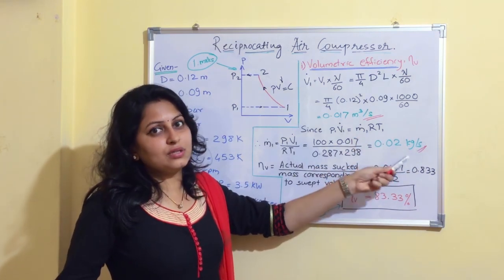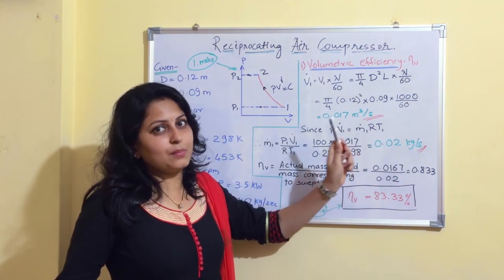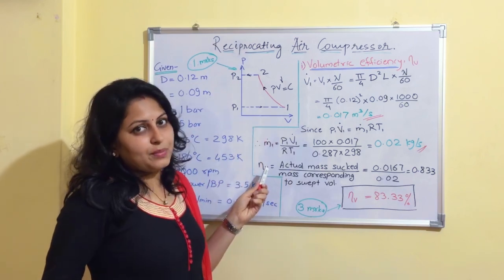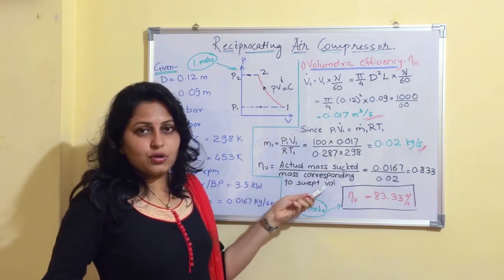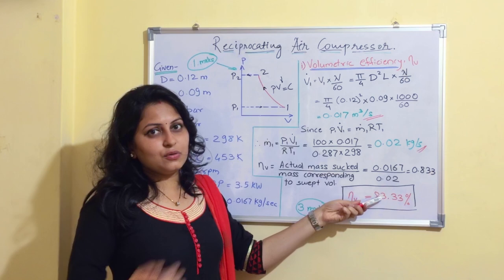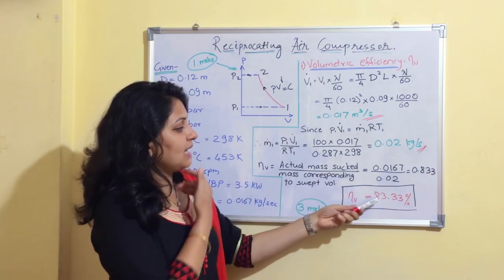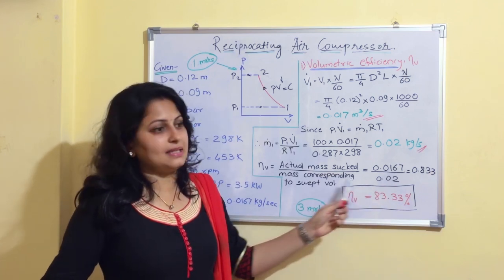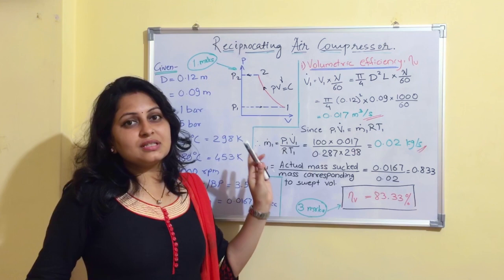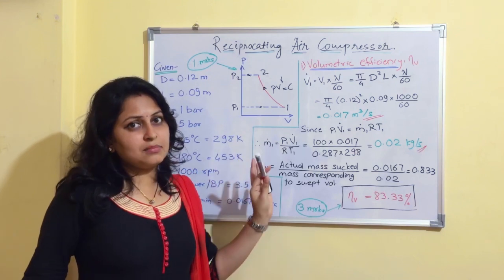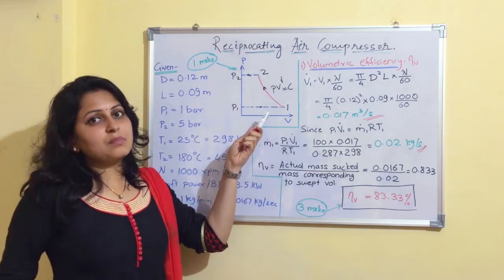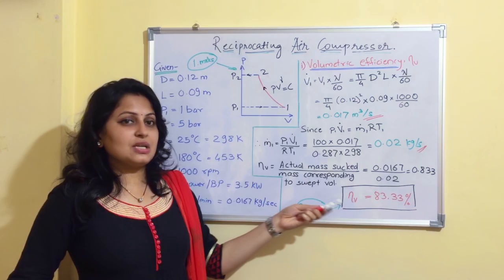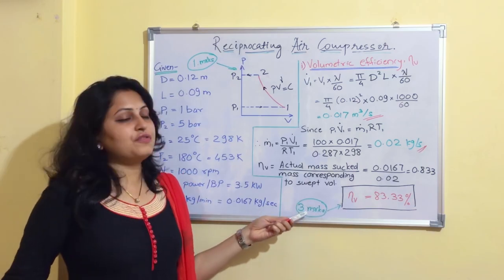Please remember all units — they are very important. Finally, substituting both values into the volumetric efficiency formula, we get 83.33%. When this question is asked for 10 marks in the university exam, the PV diagram carries 1 mark and volumetric efficiency carries 3 marks.